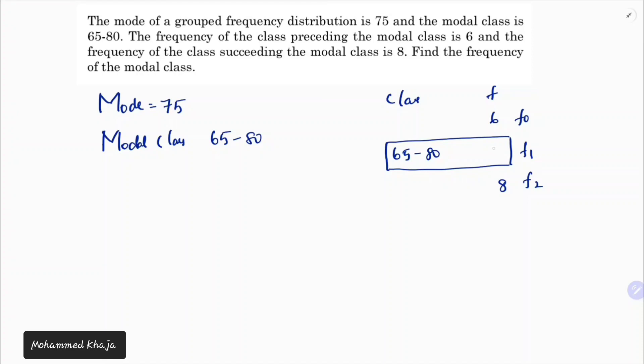The frequency of the modal class - I'll consider it as x, so I need to calculate x. The mode formula is L plus (F1 minus F0) divided by (2F1 minus F0 minus F2) times H. This is the formula for mode of grouped data.